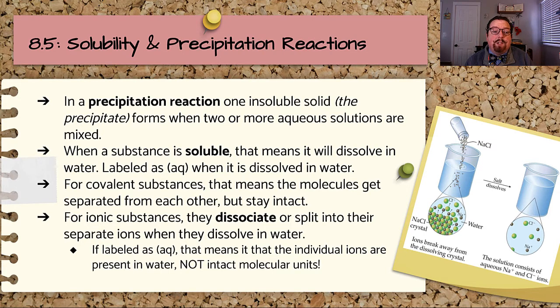For ionic substances, which do not exist as distinct molecules but as a crystal lattice structure of ions, they dissociate or split into their separate ions when they're dissolved in water.